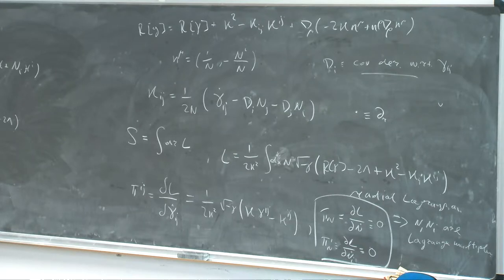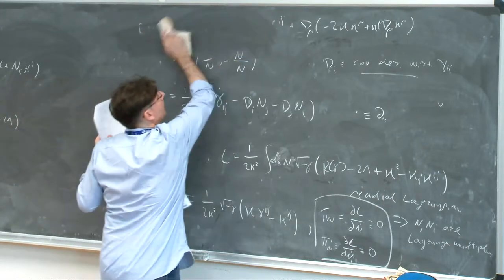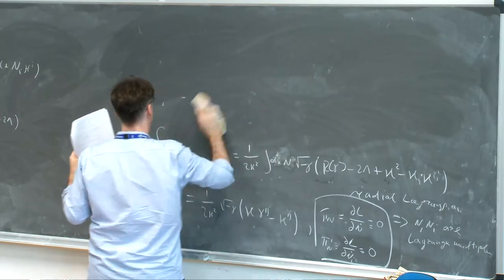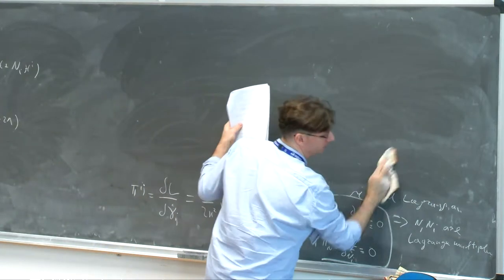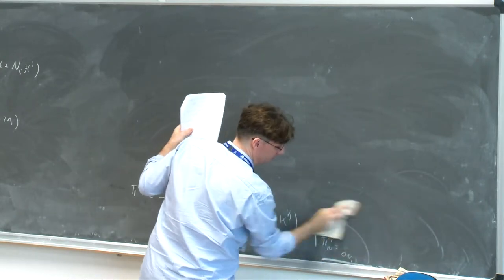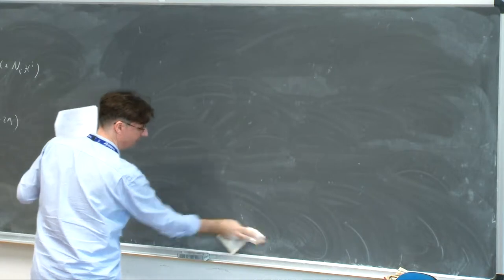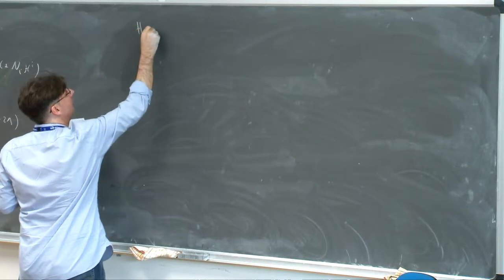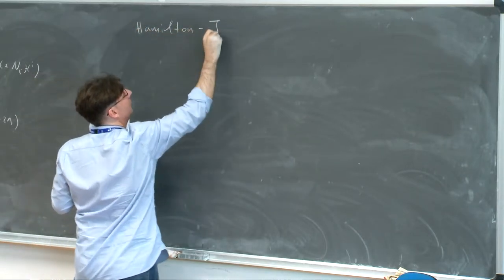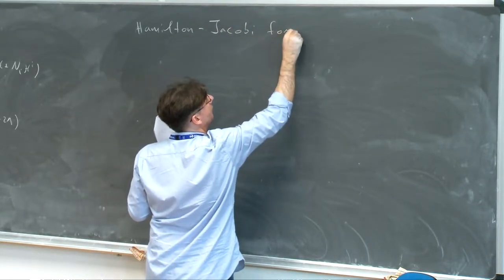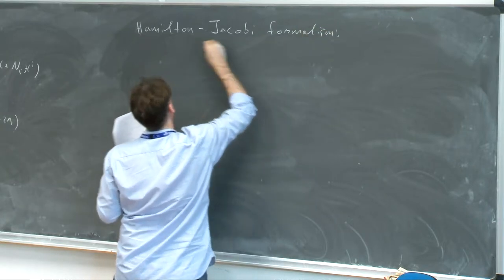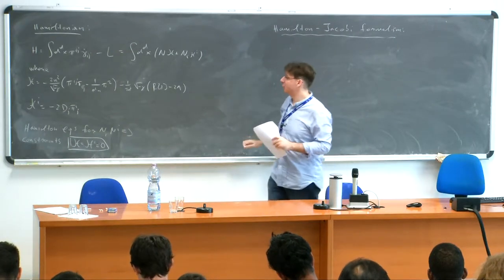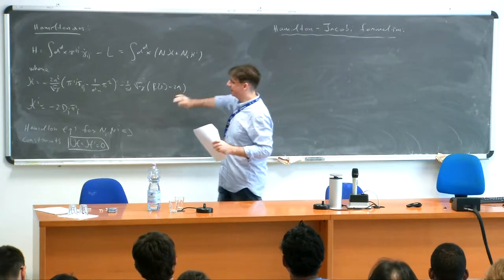Before I continue with this Hamiltonian description, I'll make a side comment because it will be useful later on. This is the Hamilton-Jacobi formula — probably you're familiar with it from classical mechanics. What it amounts to is expressing the canonical momentum not as a derivative of the on-shell Lagrangian with respect to the corresponding velocity, but rather as a derivative of this functional S of gamma with respect to gamma_ij. So notice there is no radial derivative here — it's not the velocity, it's just the field itself.